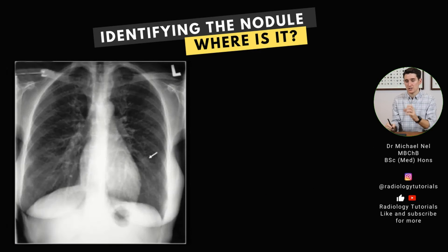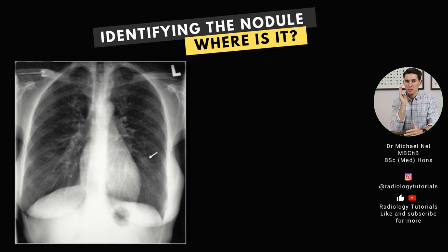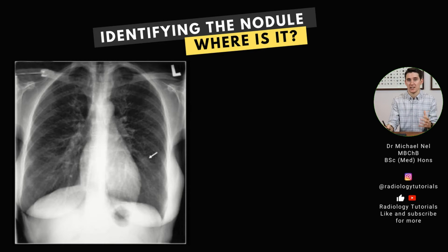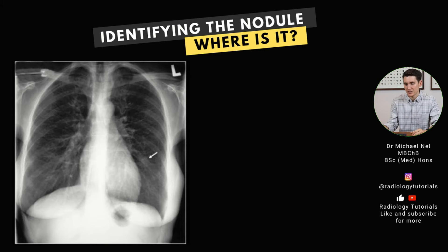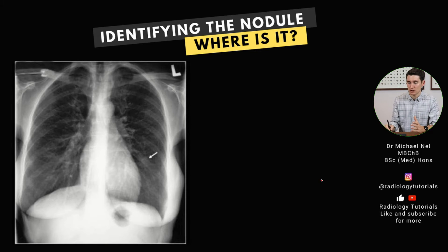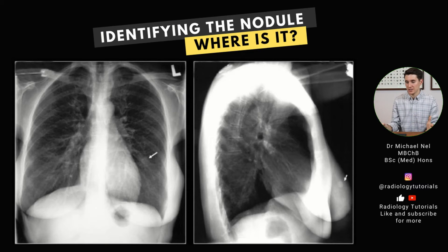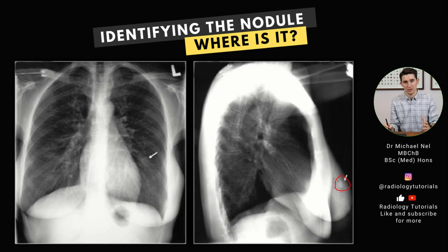When noticing a pulmonary nodule, we need to find out where in the AP plane that nodule lies. There may be a silhouetting sign or a hilum overlay sign, but often in the periphery of the lung it's very difficult to know where that lesion lies. It's important to assess the lateral radiograph to see where that lesion lies. Here we can actually see that this is actually a breast mass and not a pulmonary nodule.